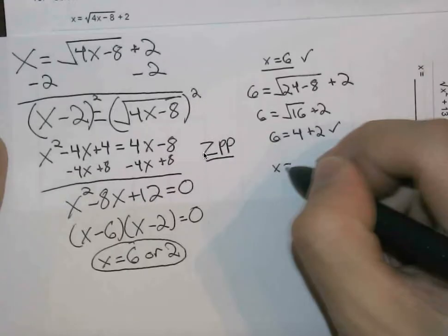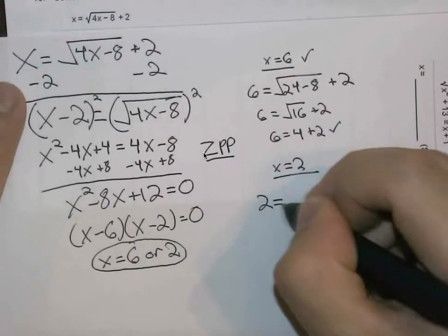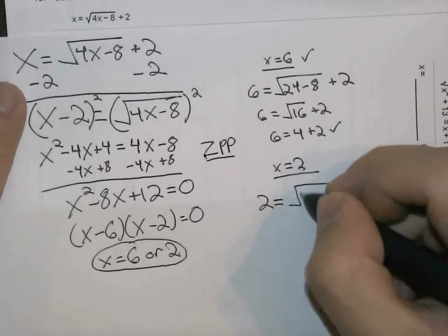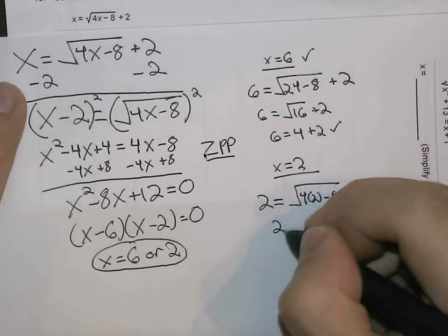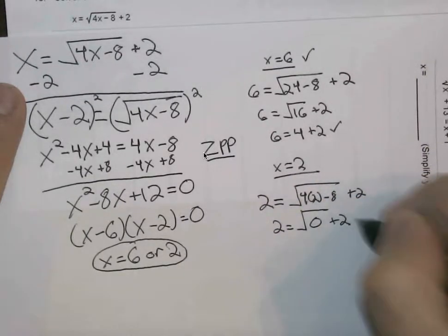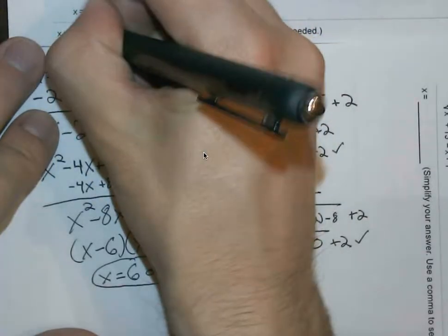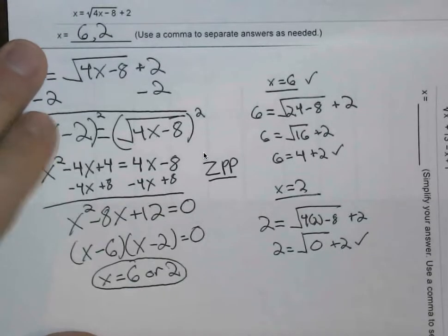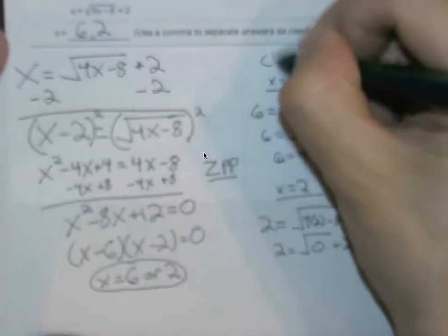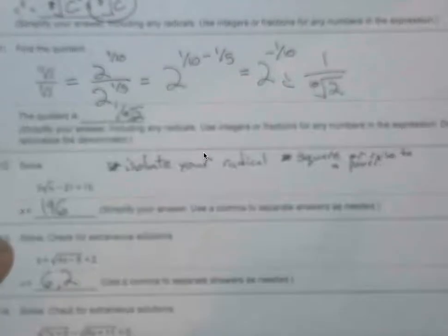We'll check if x could be equal to 2. We'll plug back in here. So here, 2 equals the square root of 4 times 2 minus 8 plus 2. Eventually, 2 equals the square root of 0 plus 2, which is a valid statement. So x can be equal to 6 or 2. So over here, I checked my work, if you're curious. Of course, you can pause the video at any time and double check to make sure everything sounds good.